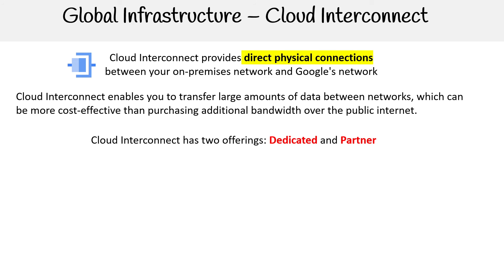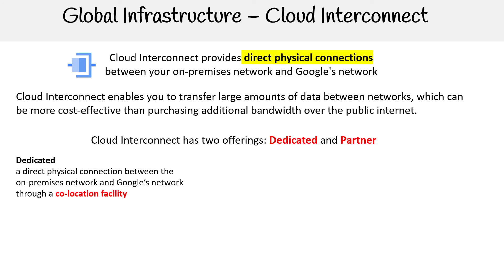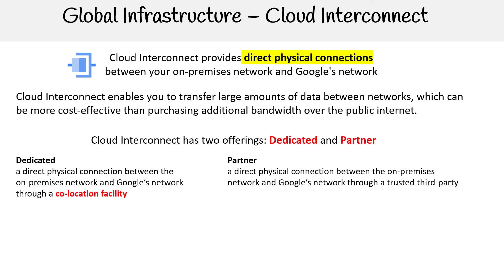There are two offerings: dedicated and partner. For dedicated, this is a direct physical connection between the on-premise network and Google's network through a co-location facility — we'll talk about what that means in a moment. Then you have partner interconnect, which is a direct physical connection through a trusted third-party data center or provider. On the dedicated side, this is between 10 to 200 gigabytes per second, and for partner it's between 50 megabytes per second and 10 gigabytes per second.